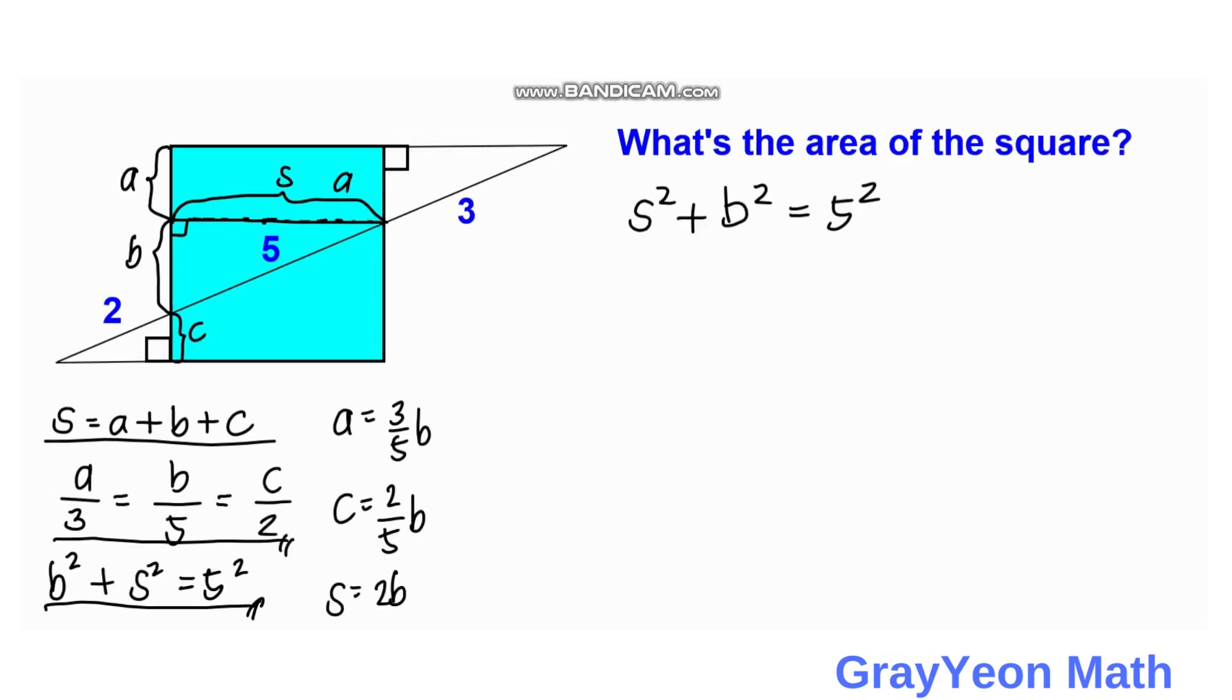Okay, now going back to the Pythagorean theorem that we got earlier, S squared plus B squared is equal to five squared. But earlier we got S is equal to two B, so S squared plus, since S is equal to two B, then B is equal to S over two. So we have to square that, which is equal to five squared.